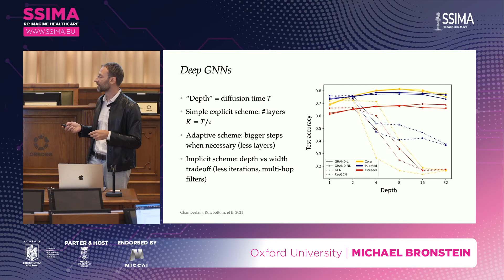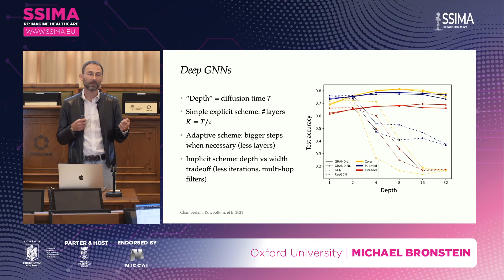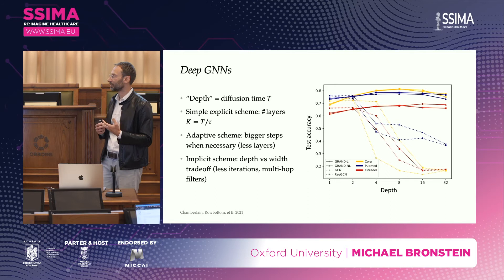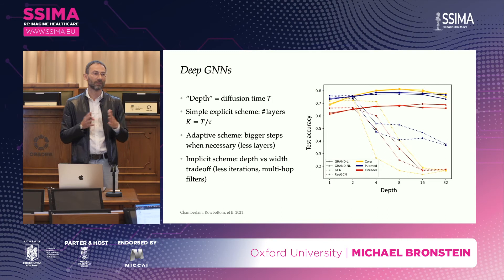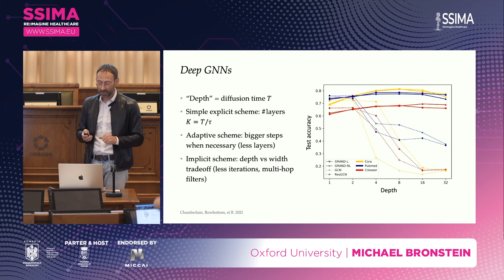Because of oversmoothing, it is generally considered difficult to develop deep graph neural networks with many layers. But here depth is not a problem because we have diffusion time rather than a standard notion of depth — the number of layers depends on how you discretize the time. With larger step sizes, adaptive step sizes, or implicit schemes, you can trade off accuracy for fewer layers.